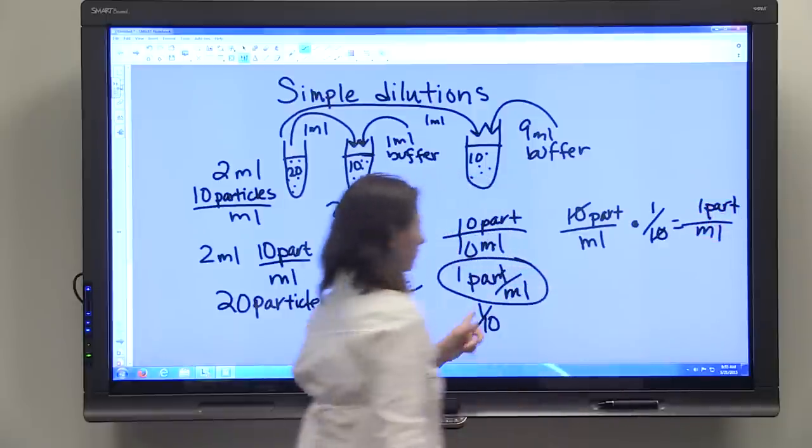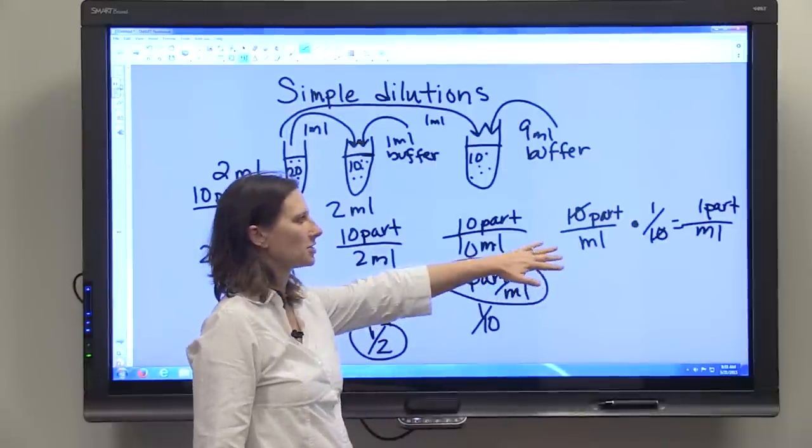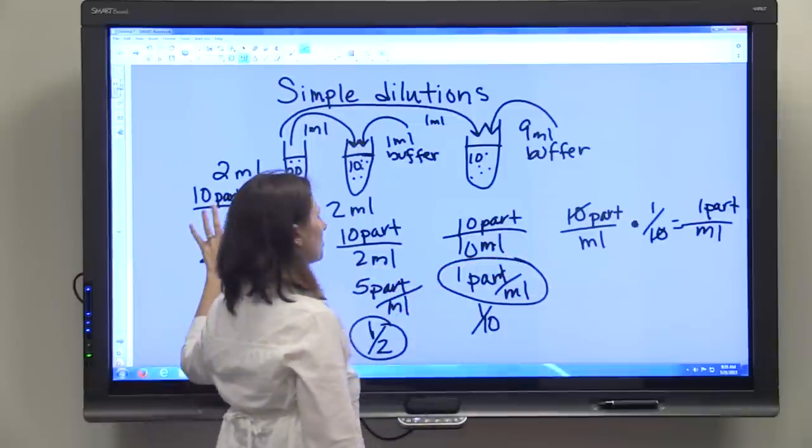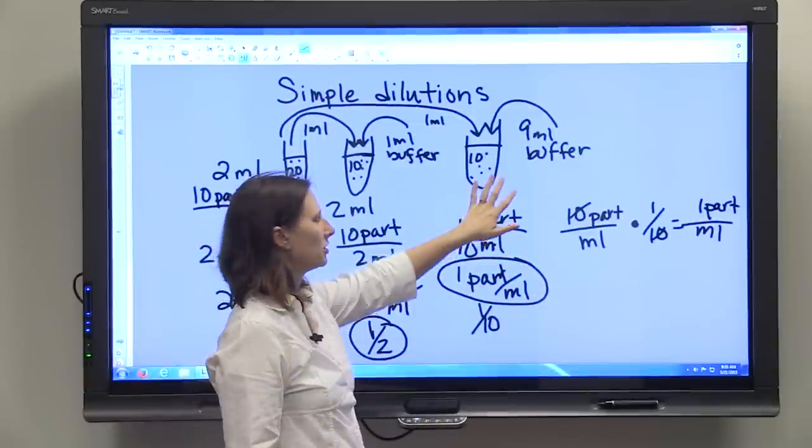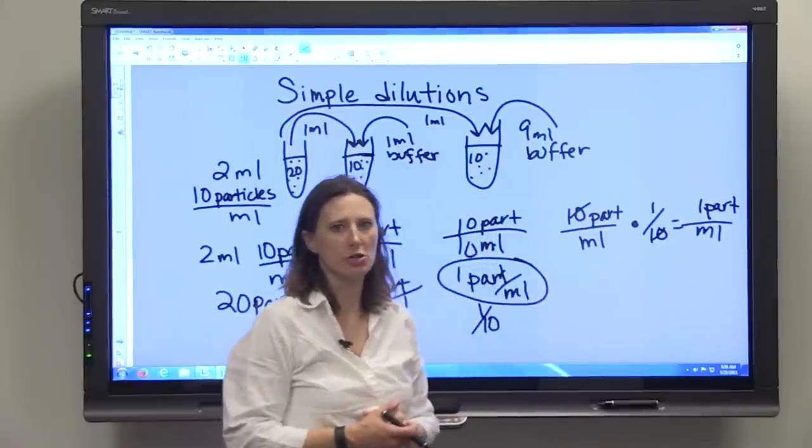which is what we said this final concentration is. So, when you're trying to find out what the final concentration is, if you know your starting concentration and you know your dilution factor, you should be able to come up with your ending concentration.